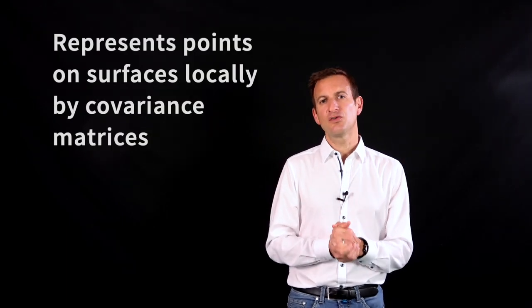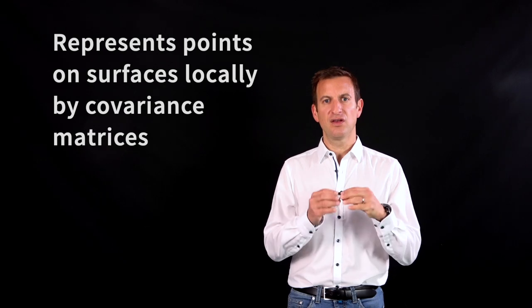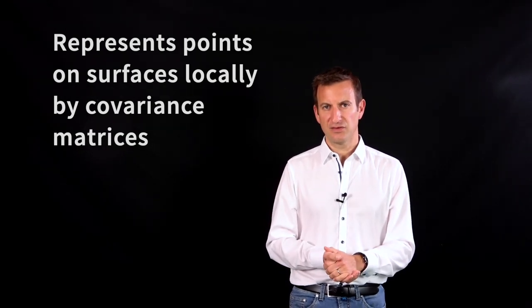What it basically does is it takes the local surfaces of your point clouds into account. You can see them as computing local small covariance matrices along these surfaces and then performing a data association which takes the shape of this covariance matrix into account.